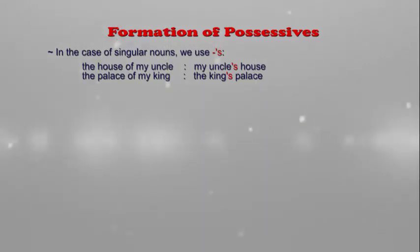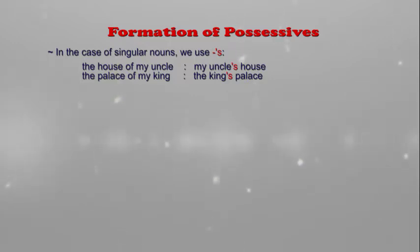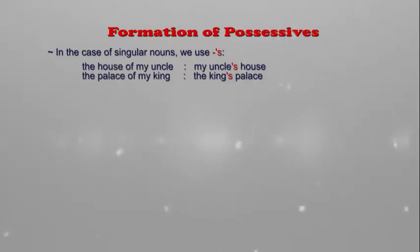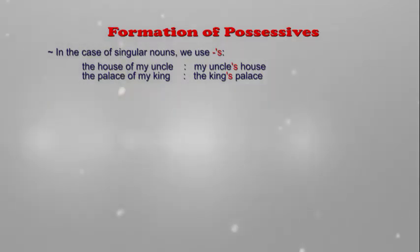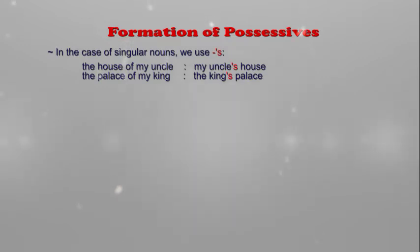When you write it in the possessive form, you write: my uncle, apostrophe s, and then house — giving 'my uncle's house'.